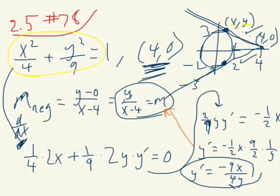If we solve for this, I'll throw the x stuff to the side. On the left side, you're going to have 2/9 y y prime. So I'm going to get y prime by itself. I'll have negative 1/2 x times 9/2 times 1 over y. We could write it as negative 9x over 4y.